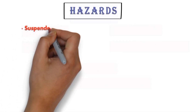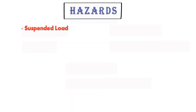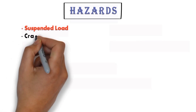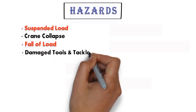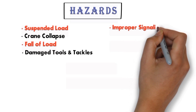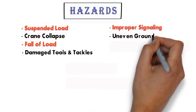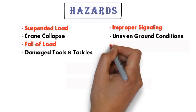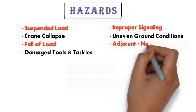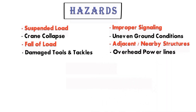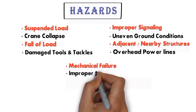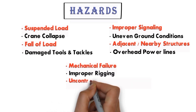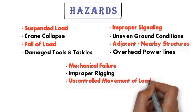Let's first see the hazards. The first hazard is suspended load — if any person comes under the lifted load, the suspended load may fall on them. Second is crane collapse. Third is fall of load. Using damaged tools and tackles is also a hazard. Not giving proper signals to the crane operator is also a hazard. Poor ground conditions, adjacent or nearby structures, overhead power lines, mechanical failure, improper rigging, and uncontrolled load movement are all additional hazards.